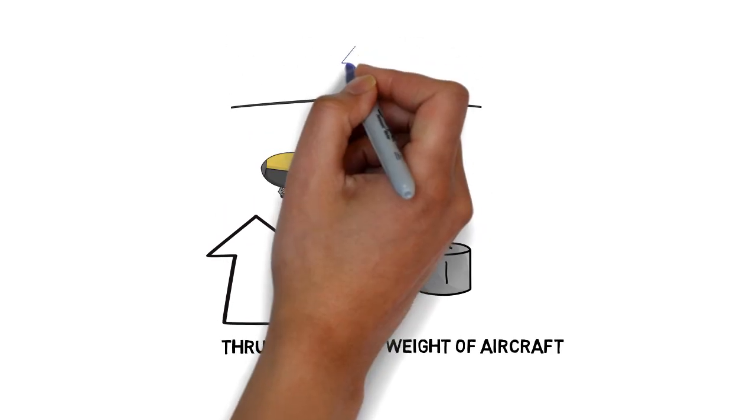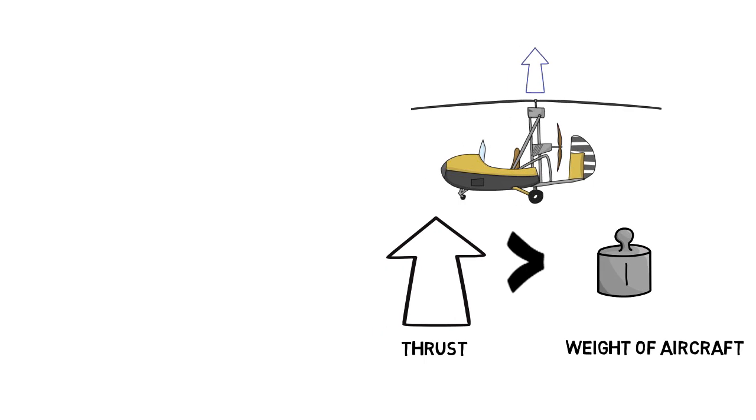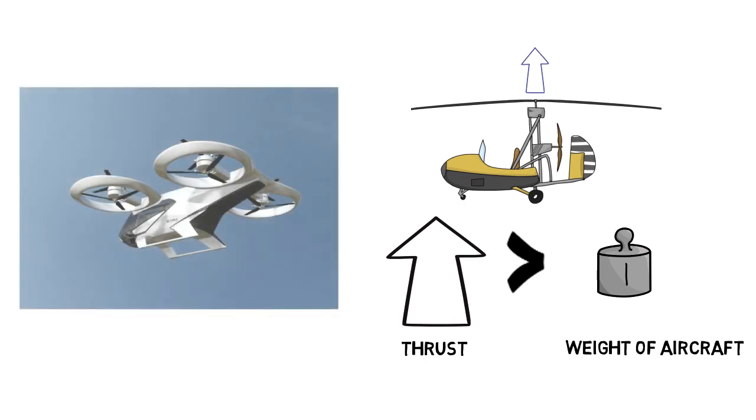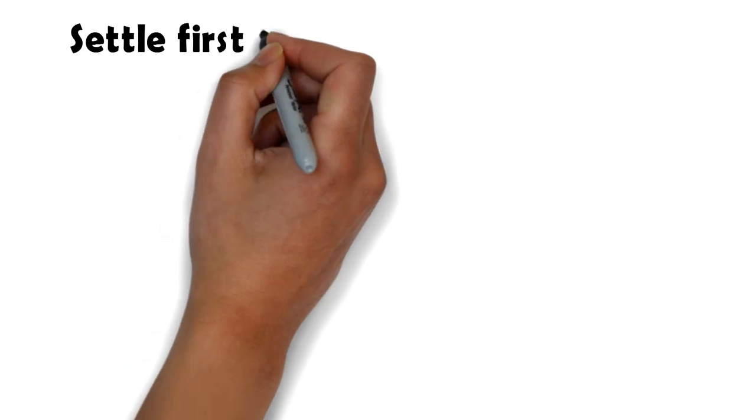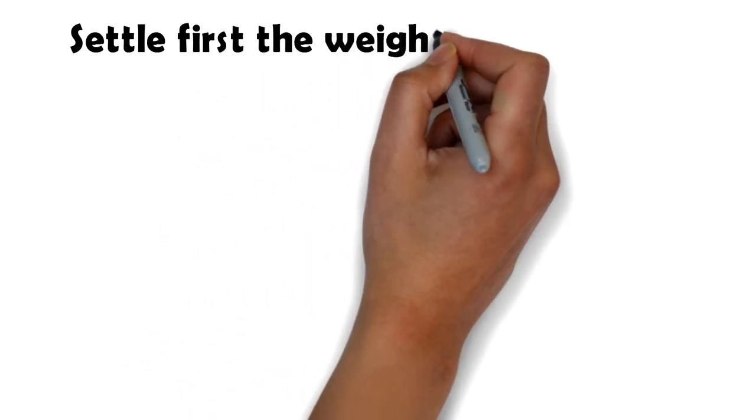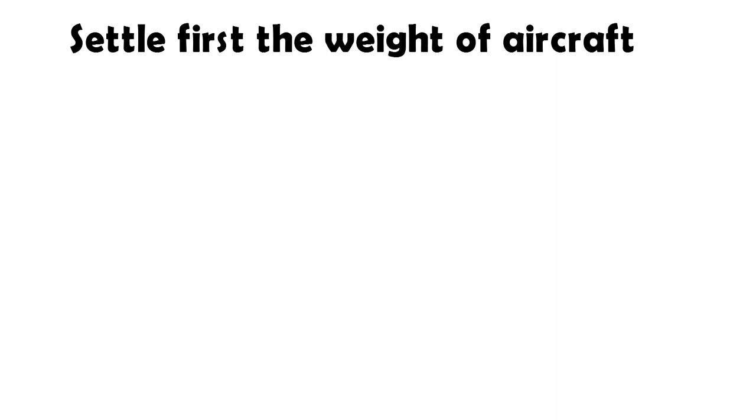Now in an eVTOL aircraft we use propellers that are rotated to a vertical axis to achieve upward thrust. The blades in the propeller should be long enough and the motor should rotate fast enough to give us the thrust force we need. The required thrust depends upon the total weight. The first parameter therefore to settle would be the total weight of the aircraft with the passenger included.